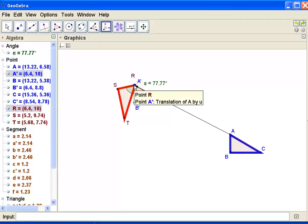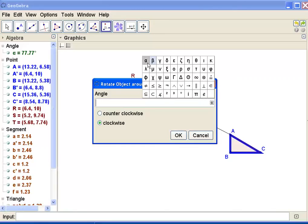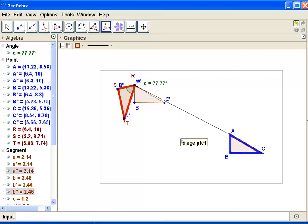So my object to rotate is going to be my polygon. My center of rotation is going to be A prime, which is also R. That point is going to be fixed. And finally, I'm going to rotate clockwise by an angle of alpha.